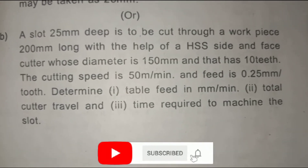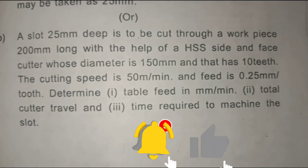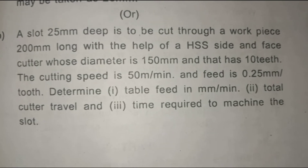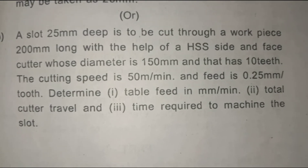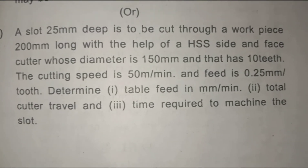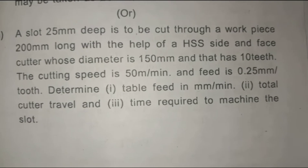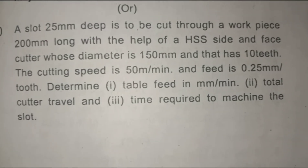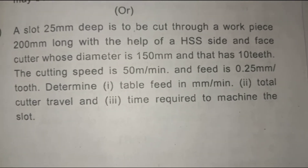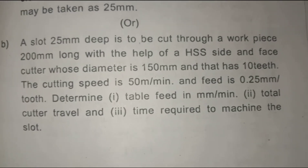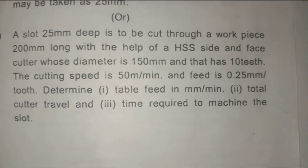Come to the sum. First question: A slot 25mm wide is to be cut through a workpiece 2200mm long with the help of an HSS side and face cutter whose diameter is 150mm and has 10 teeth. The cutting speed is 50 meters per minute and feed is 0.25mm per tooth. Determine: table feed in mm per minute, total cutting travel, and time required to machine the slot.